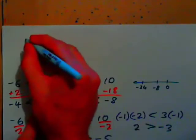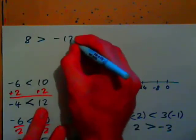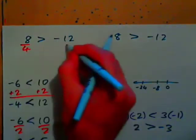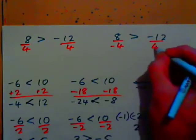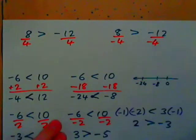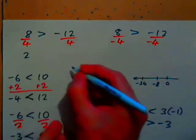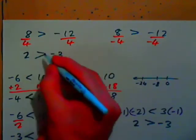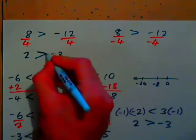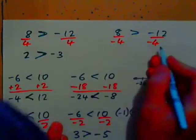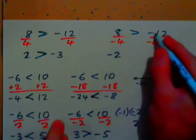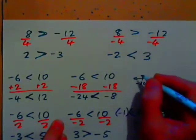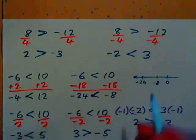Let's go over this clearly. Say 8 is greater than negative 12. Divide both sides by positive 4: 8 over 4 is 2, negative 12 over 4 is negative 3. 2 is still greater than negative 3 — the sign stays the same direction. Now divide both sides by negative 4: we get negative 2 on the left and positive 3 on the right. Negative 2 is less than 3, so when dividing by a negative, we change the direction of the inequality.